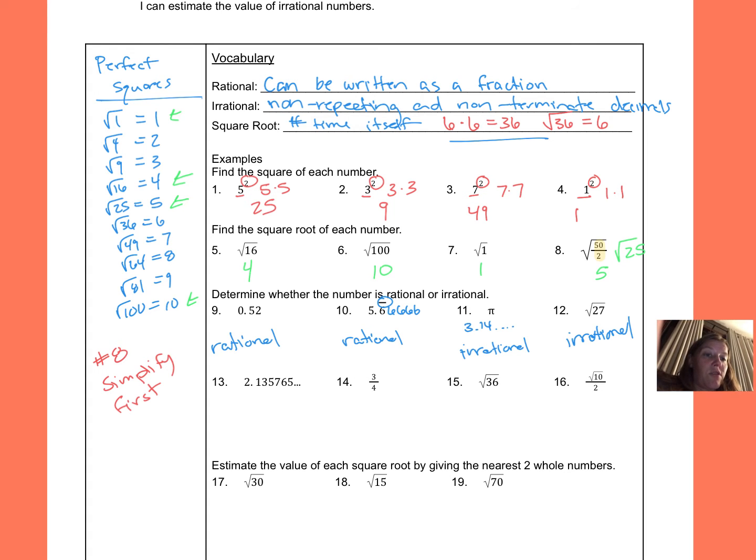Number 13, 2.135765, so I'm not seeing any kind of pattern in these numbers. And these dots mean that it continues on, so it's not terminating, keeps on going, no pattern. So this is another irrational. Does not stop, does not repeat.